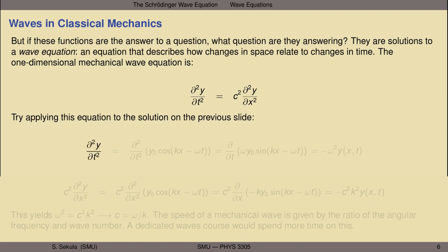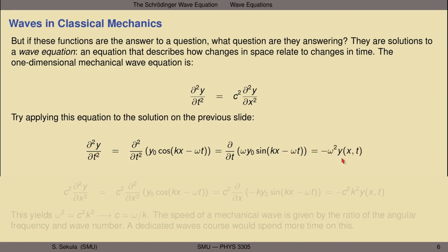The left-hand side is the second derivative with respect to time of the vertical displacement y. Plugging in our function, we take two time derivatives: the first derivative of cosine gives negative sine, and the derivative of the argument returns a negative omega. So we get omega times y₀ times a sine function. Taking the time derivative one more time gives an additional factor of negative omega, yielding negative omega squared times the original function y of x and t.